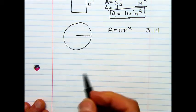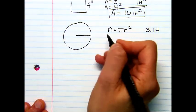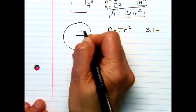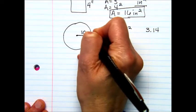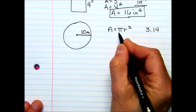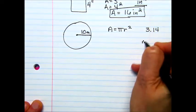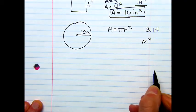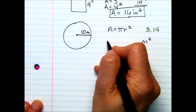So if we want to find the area, and let's say this is 10, 10 meters. Again, our answer is going to be meters squared. So we just plug in what we have, area equals pi.